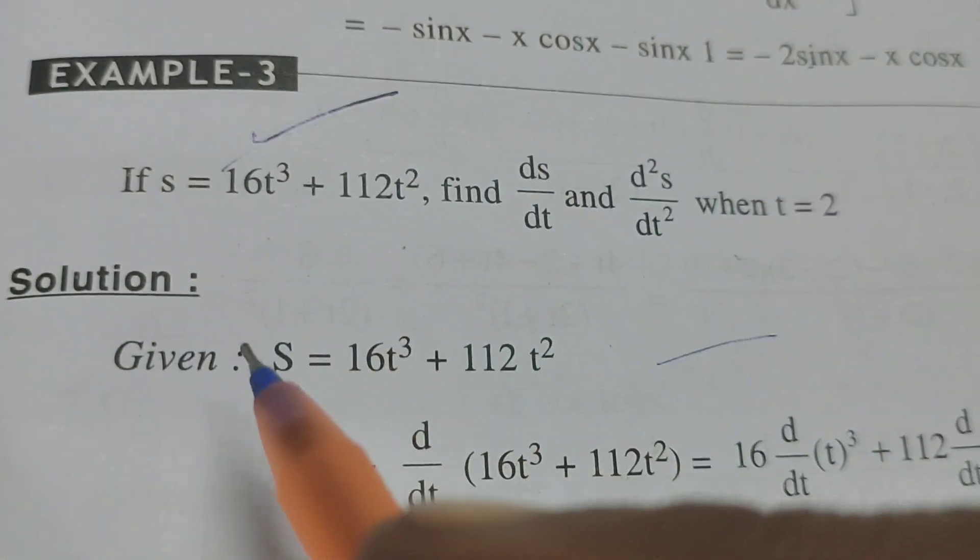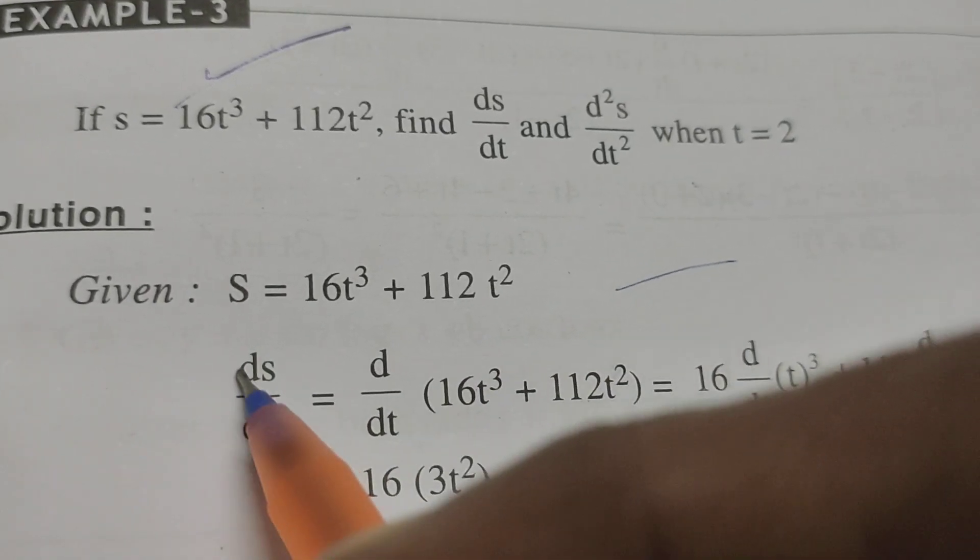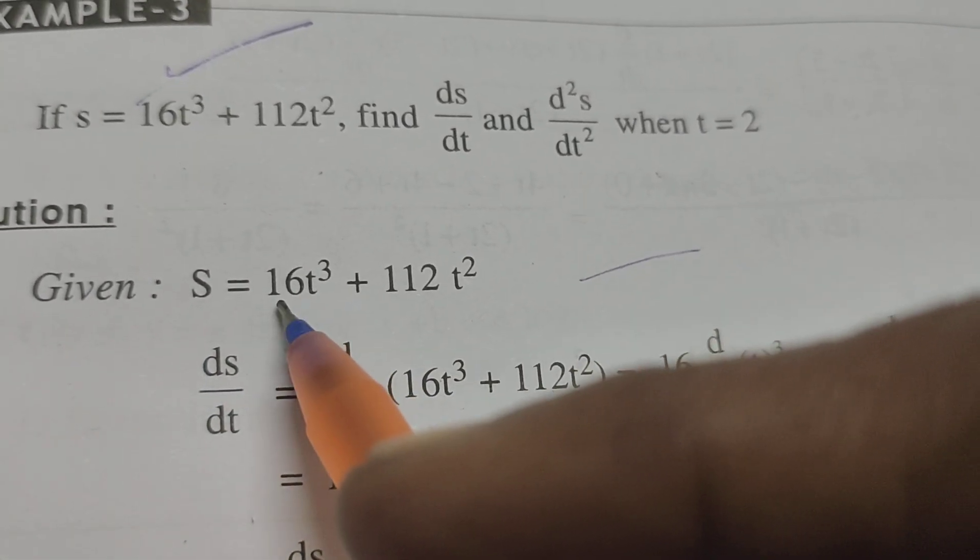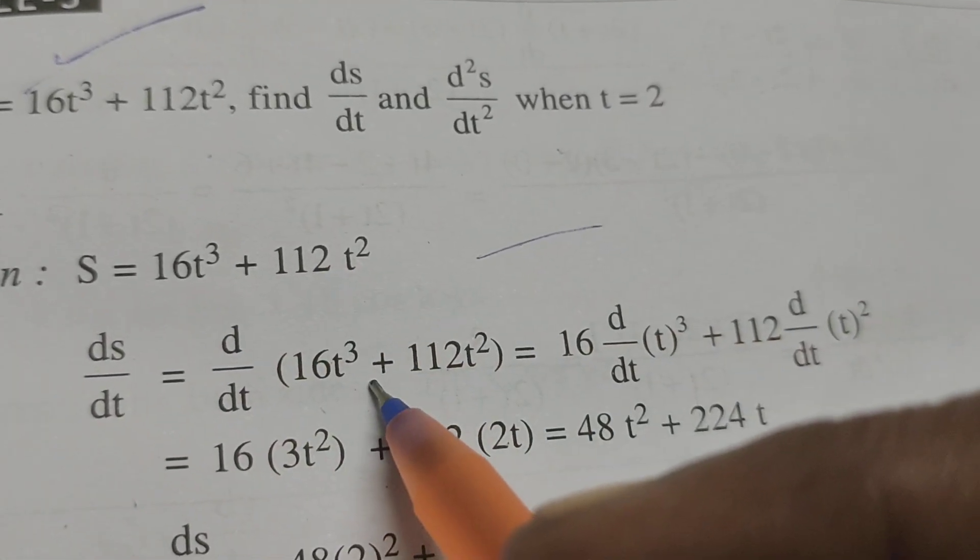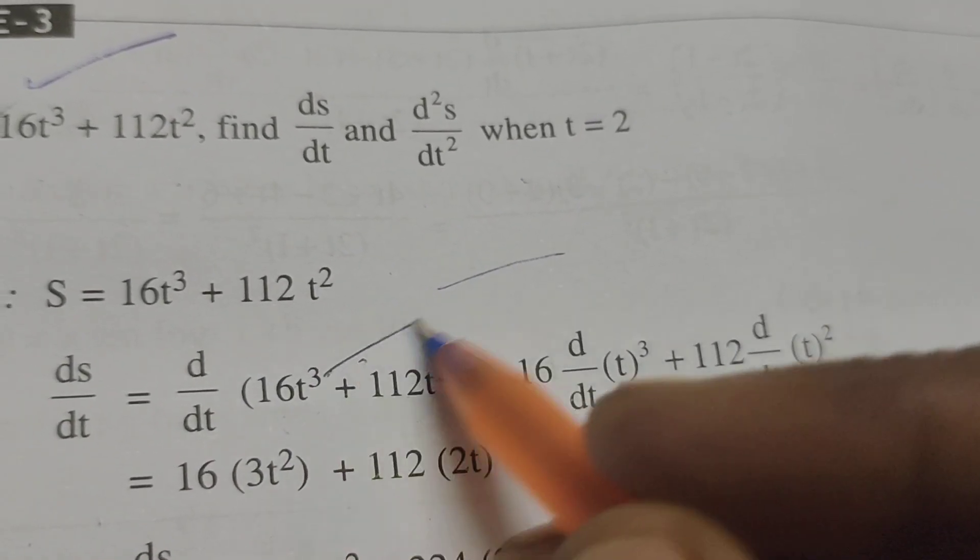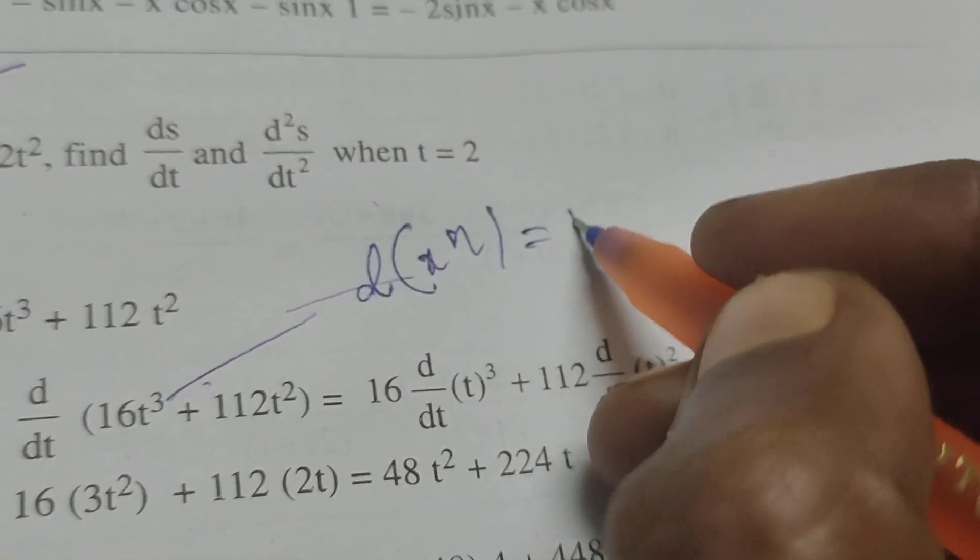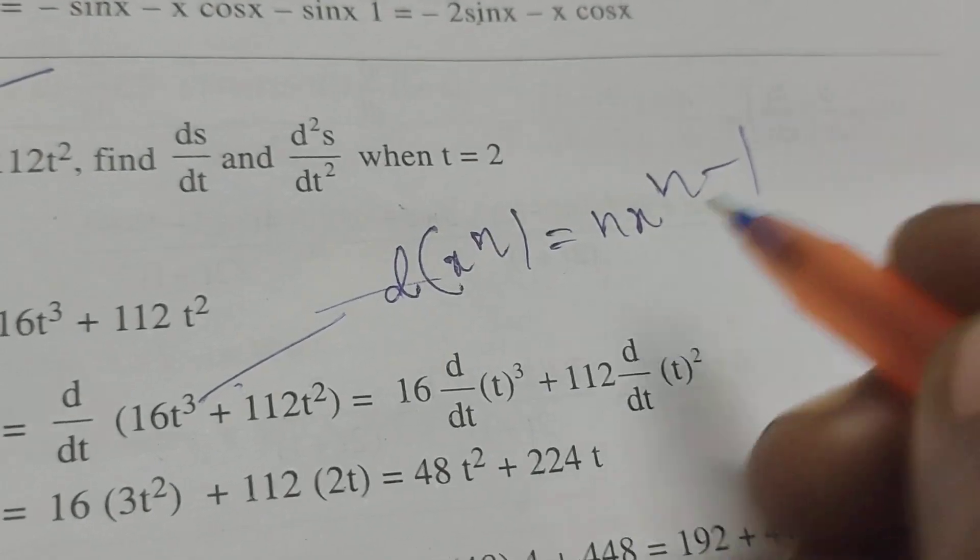First, differentiate the given s with respect to t: d/dt of s equals d/dt of (16t³ plus 112t²). To differentiate this, note that 16 is a constant. For t³, use the formula for differentiation of x^n, which is n times x^(n-1).